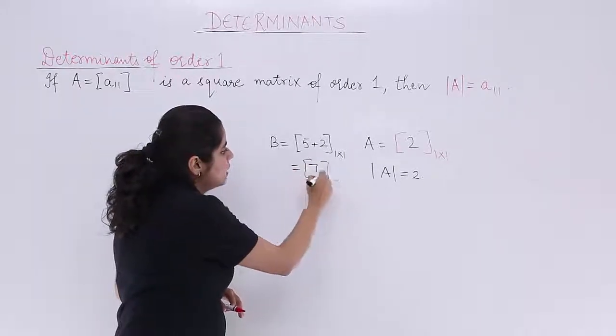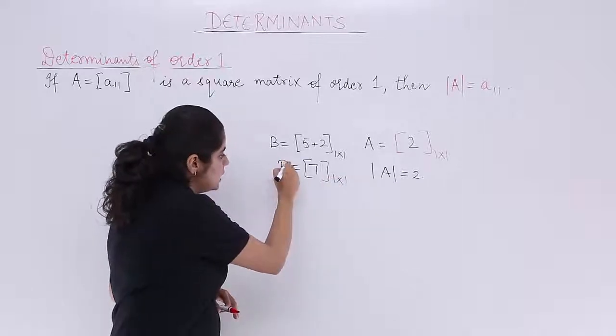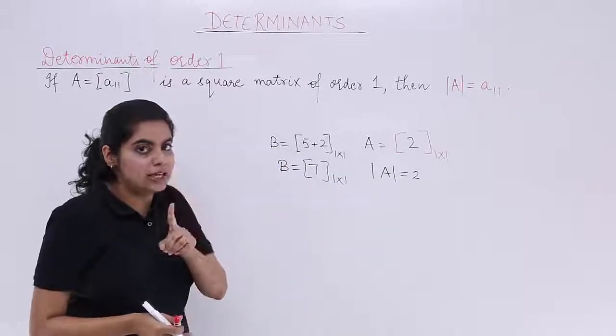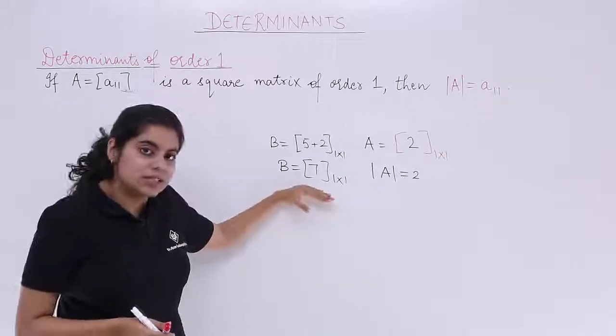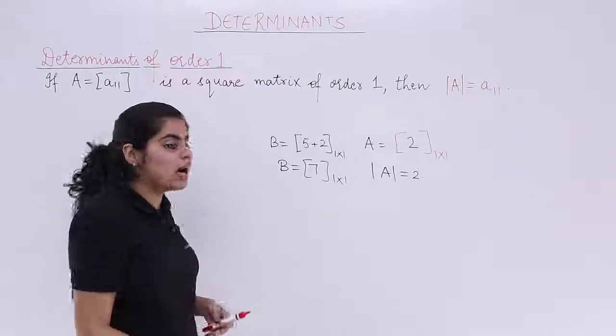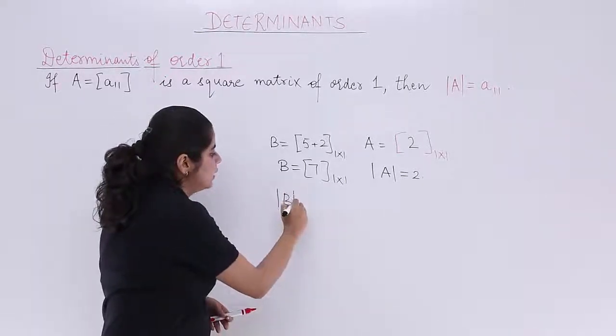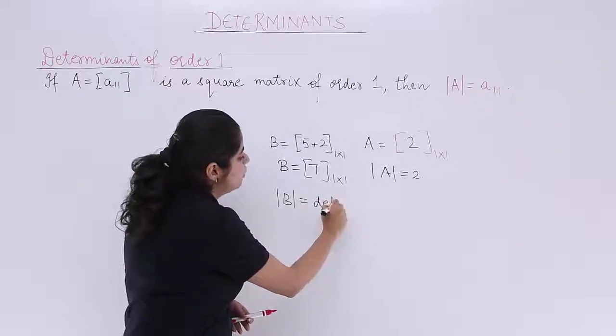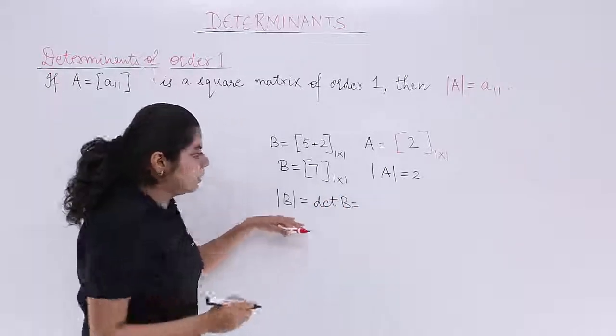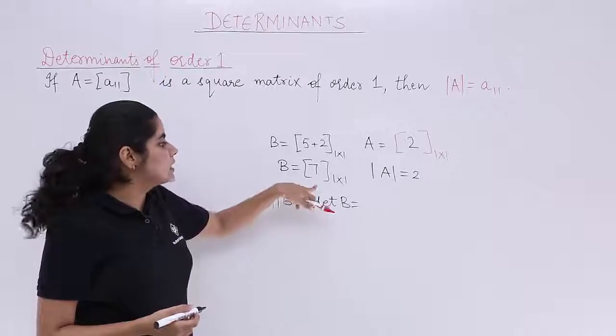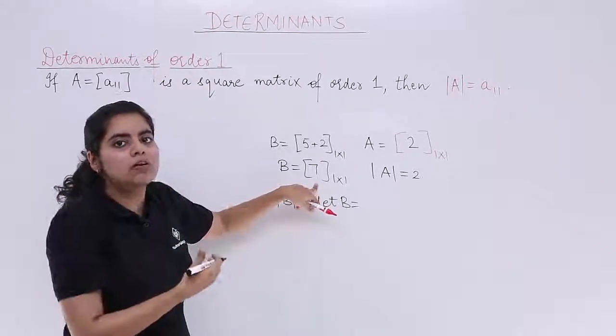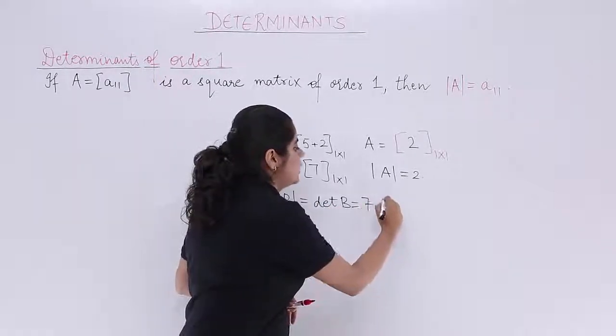So indirectly it is given to you that B is a matrix with one element only which is 7. Now if you ask what is det B or what is determinant of B, so det B can be written in both ways. That is nothing but this element itself. So it is 7 only. That is the answer.